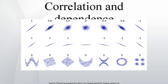As it approaches zero there is less of a relationship, closer to uncorrelated. The closer the coefficient is to either minus one or one, the stronger the correlation between the variables. If the variables are independent, Pearson's correlation coefficient is zero, but the converse is not true because the correlation coefficient detects only linear dependencies. For example, suppose the random variable x is symmetrically distributed about zero and y equals x². Then y is completely determined by x, so that x and y are perfectly dependent, but their correlation is zero — they are uncorrelated.